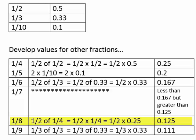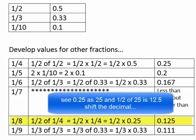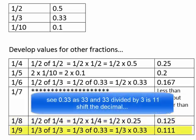I'll skip 1/7 for now. And 1/8 is 1/2 of 1/4, or 1/2 times 1/4, or 1/2 of 0.25. Again, imagine 0.25 as 25 for a moment. And if you divide 25 in half, it's 12 and a half, or 12.5. Now, imagine if you have 33, and you divide 33 by 3. Well, that's 11. Shift the decimal, and you'll see that 0.33 divided by 3 is 0.11.